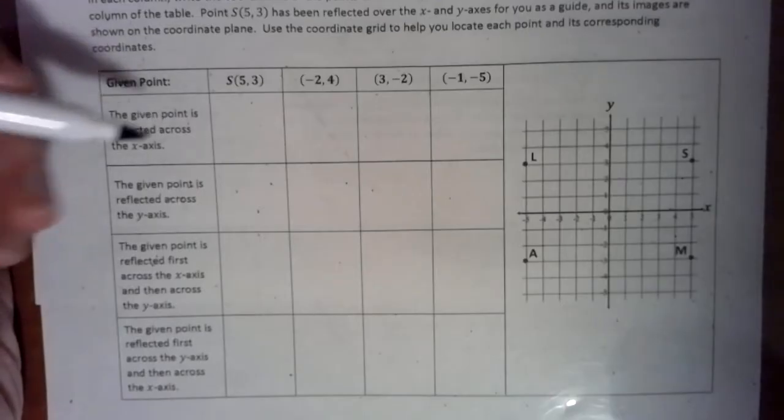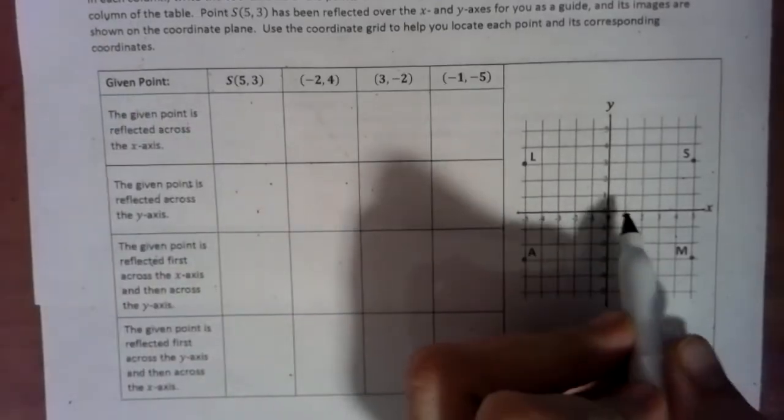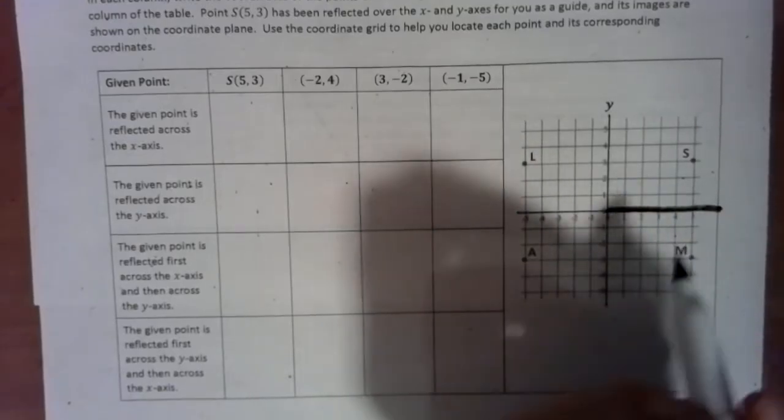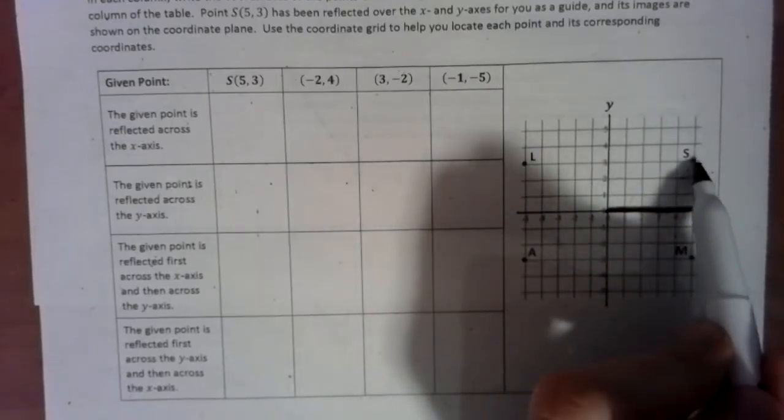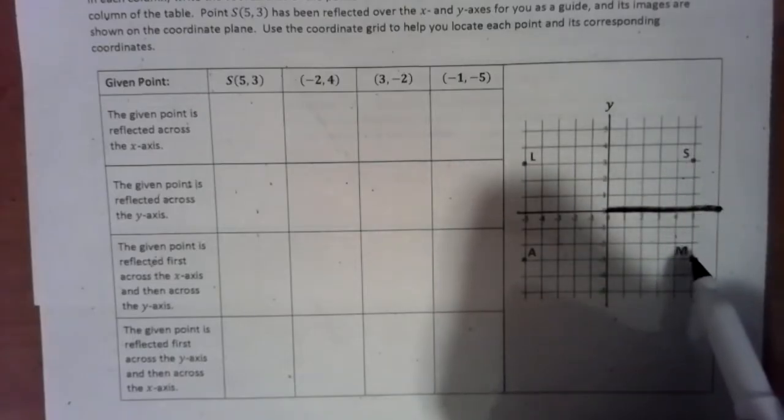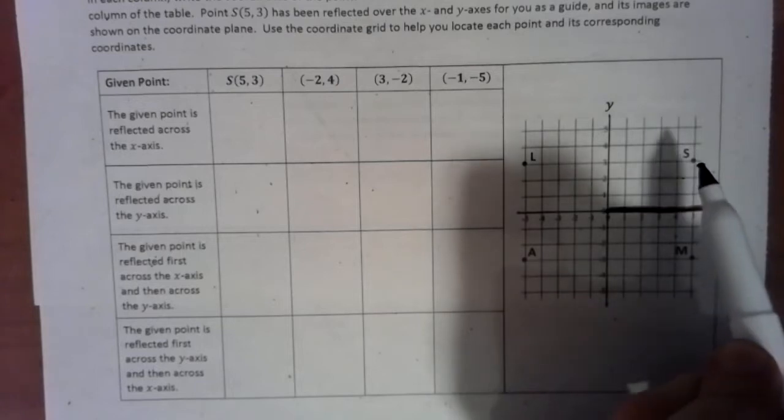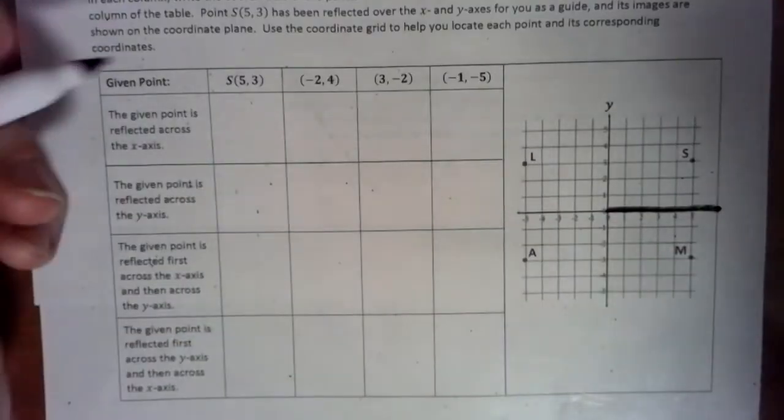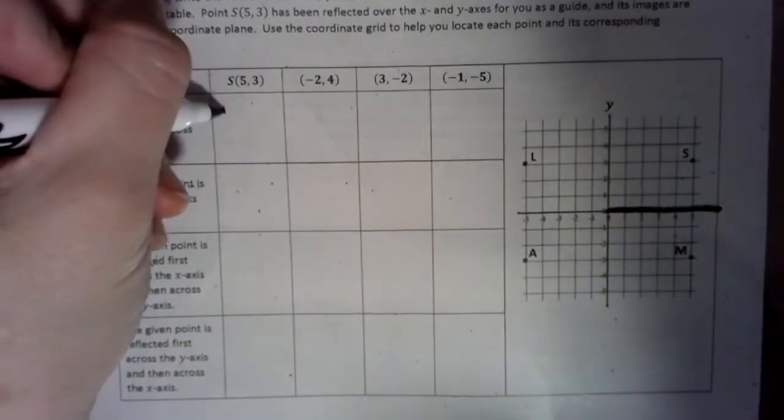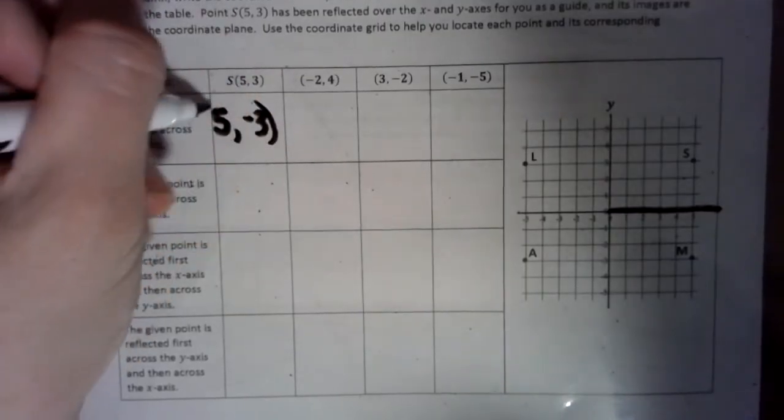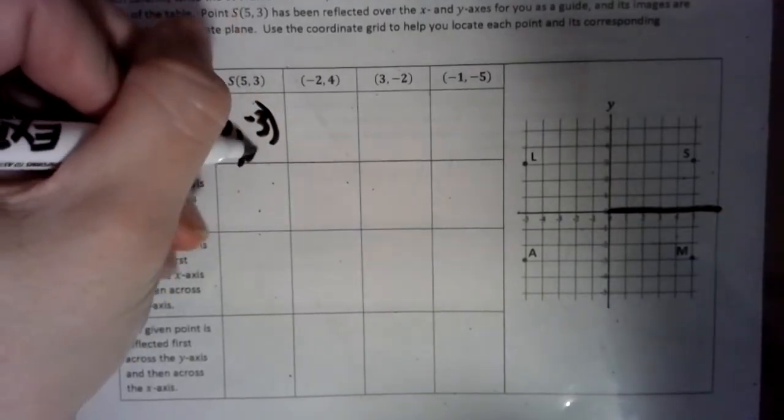given the point is reflected across the x-axis. So here's our x-axis, and you don't have to do this with your pattern. I'm just showing you, and see how this is three steps above. If you want to reflect this point over the x-axis, it's coming down here, and it's going to be touching M, because it's 1, 2, 3 jumps to the line, 1, 2, 3 jumps down here. So the point here is going to be over to the 5, but now instead of up 3, we're going to go down 3. So that right there is going to be our point.